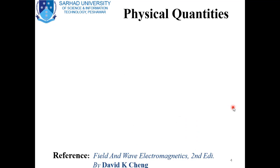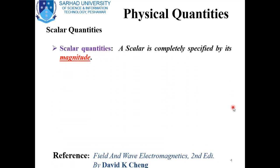In a previous lecture we divided physical quantities into base and derived physical quantities. In this lecture we will divide physical quantities into scalar quantities and vector quantities. First, let's study what scalar quantities are. Scalar quantities are those physical quantities which need only magnitude for their complete specification. A magnitude contains a number and a proper unit.